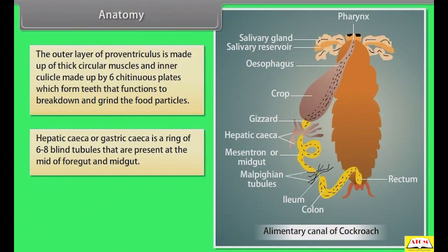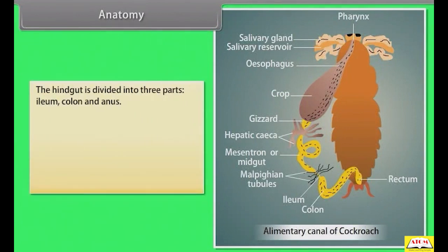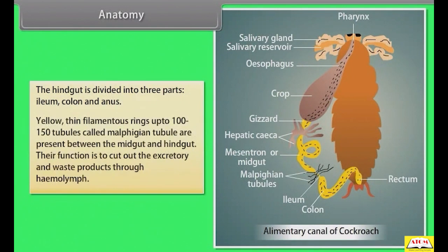The hepatic caecae — a ring of six to eight blind tubules — are present at the junction of foregut and midgut, and secrete digestive juices. The midgut and hindgut are long tubules, with the hindgut wider than the midgut. The hindgut is divided into three parts: ileum, colon, and anus. Yellow thin filamentous Malpighian tubules, numbering 100 to 150, are present between the midgut and hindgut, and their function is to remove excretory waste products through haemolymph.